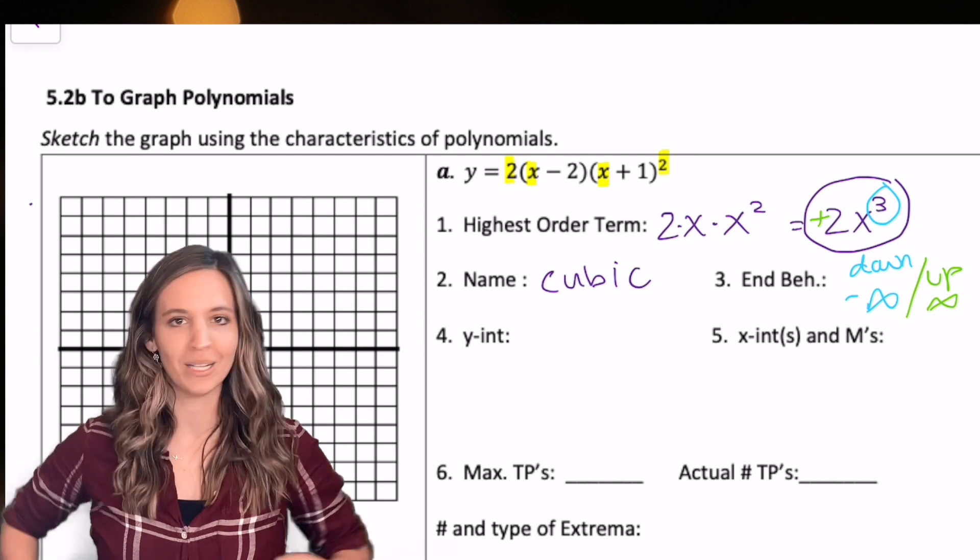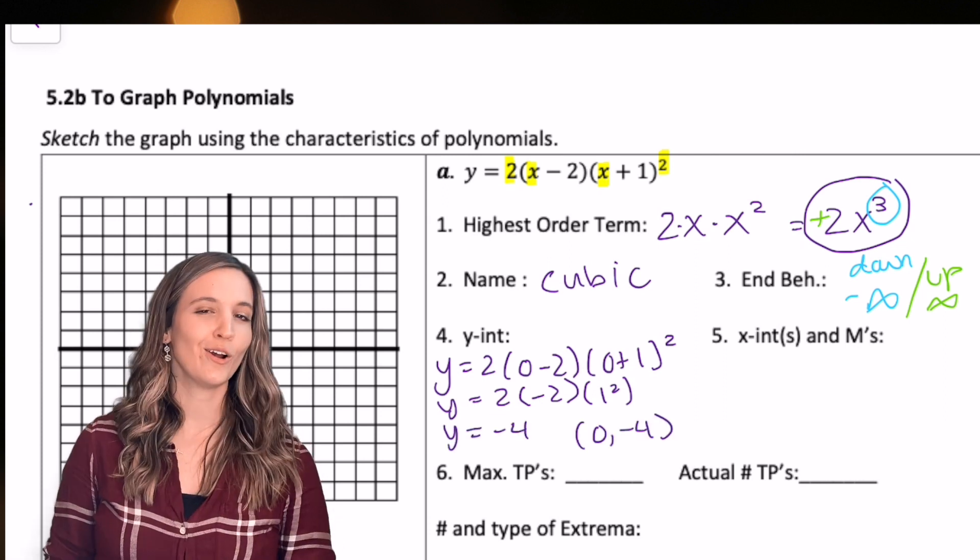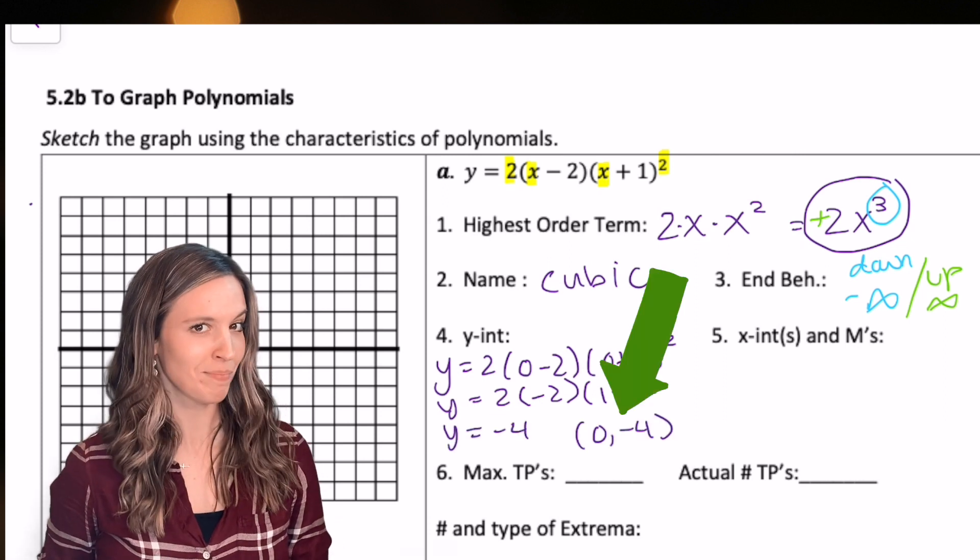Let's find the y-intercept, plugging in zero for x. Zero negative four. Did you write your y-intercept as a point?